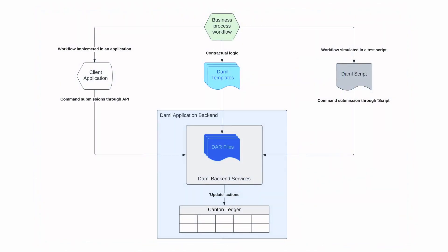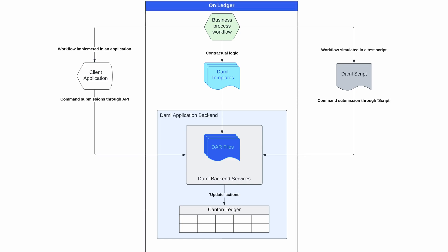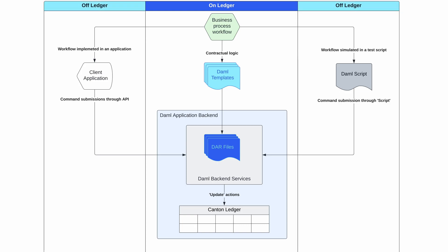However, any external application that needs to interact with the database needs to use some kind of interface — such as a driver or an API — to connect with and then read and write to the database. This analogy helps us think about the code we write in DAML templates as on-Ledger, whereas what we write in scripts or external commands as off-Ledger. These commands are then submitted to the DAML backend services that process, validate, and carry out the commands on the Ledger in the form of Ledger update actions.